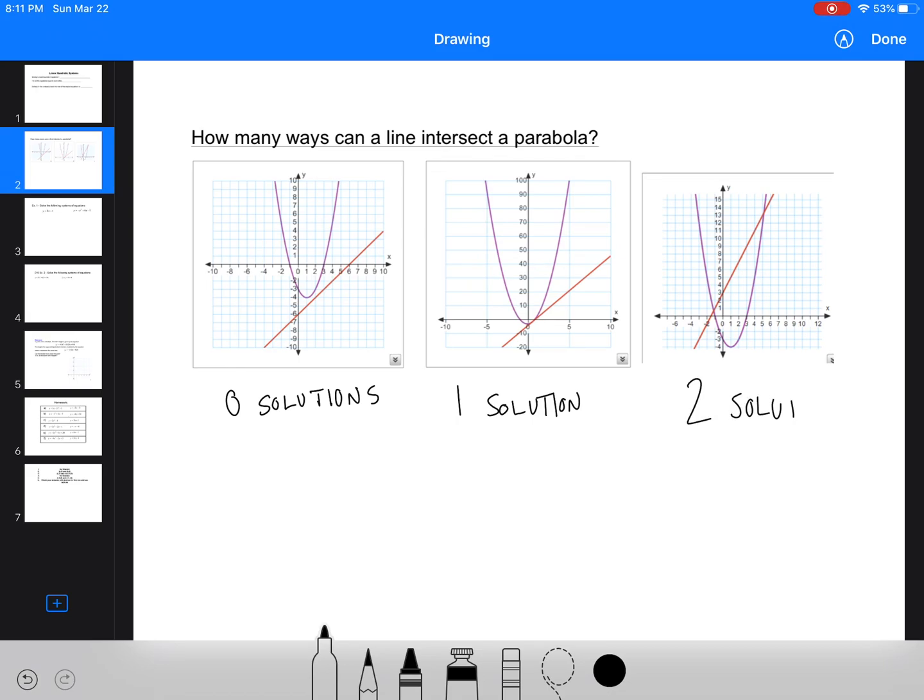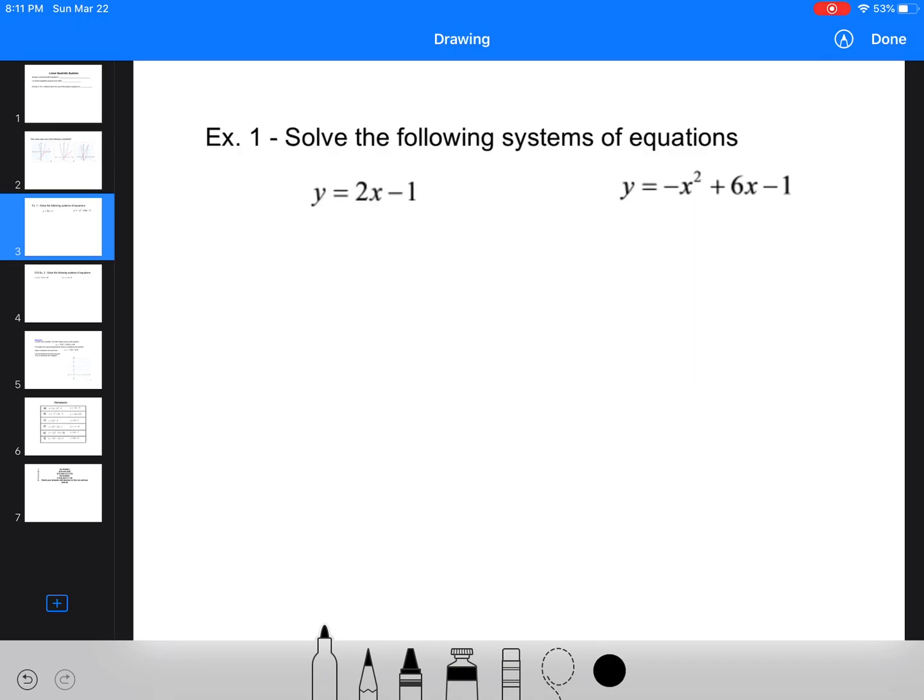or two solutions. And I've given you just examples using the graph just to show this. Those are the only things that we can have. We can flip the quadratics around but same thing, we can only have zero, one, or two solutions. So looking at some examples.